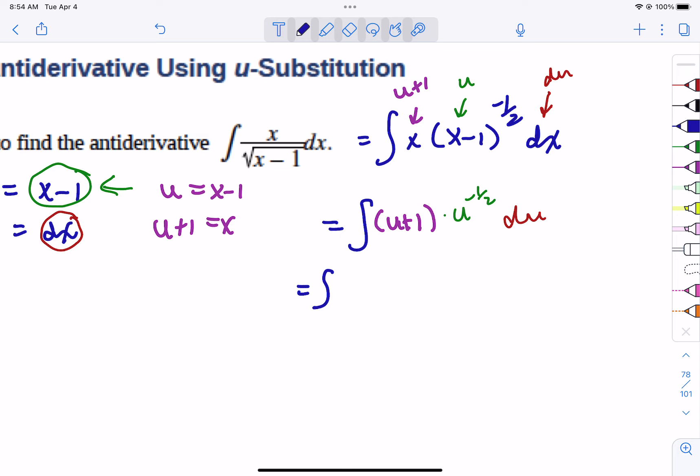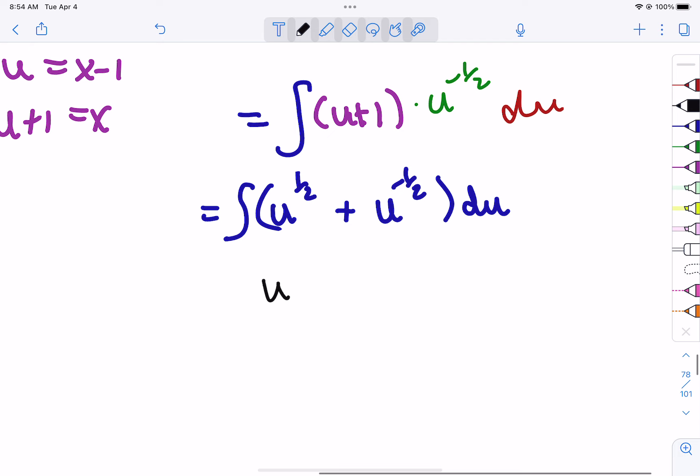So when we get to that point, we're going to have u to the 1st times u to the negative 1/2 is u to the 1/2, and then this is going to be u to the negative 1/2 du. Now, we know how to undo power rules. We just add one to the power and divide by the new power. So this power is going to be 3/2, divide by it, 2/3. This is going to be 1/2, divide by it, multiplied by 2. And then don't forget plus c.